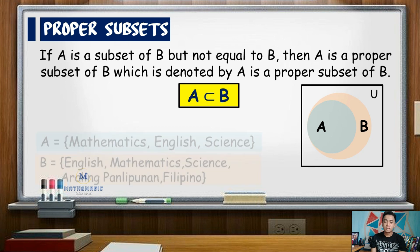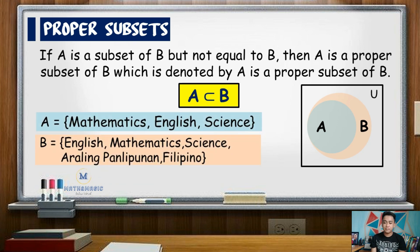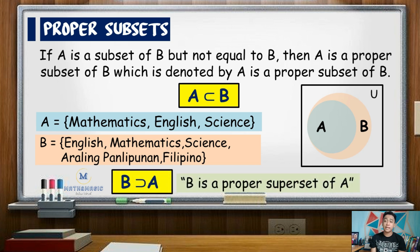As an example, say set A has the elements mathematics, English, and science. While set B has the elements English, mathematics, science, araling panlipunan, and Filipino. Here notice that araling panlipunan and Filipino are not elements of set A. So here, we can say that set A is a proper subset of set B. Another way of expressing this is set B is a proper superset of set A.